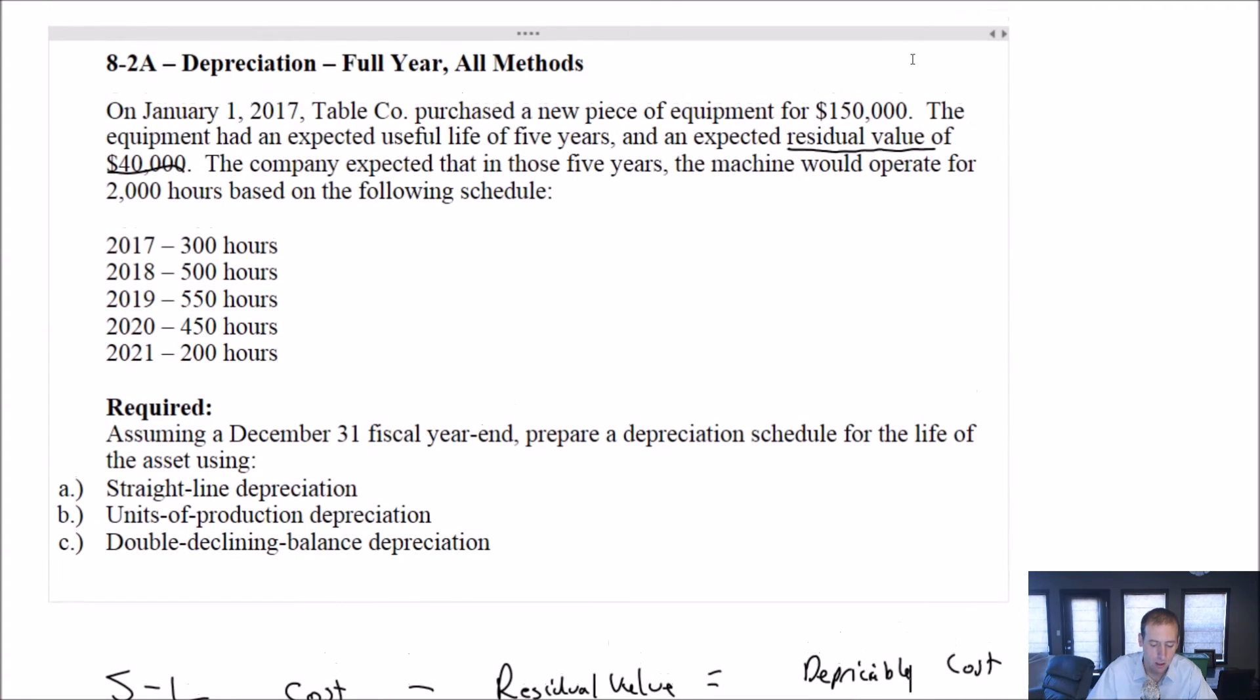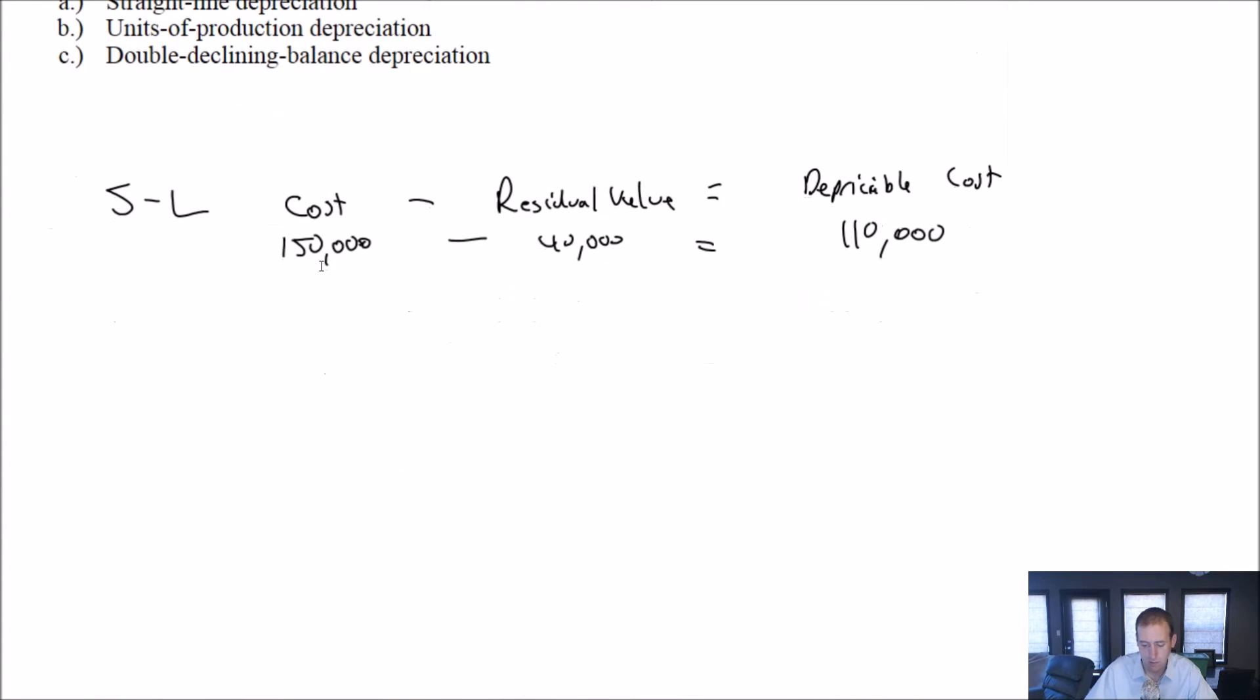So $110,000 of depreciation is expected. Let's read on. The company expected that in those five years, the machine would operate for this many hours. That's going to be all well and good, but we don't care about the hours for straight line. We just care about the number of years and the thing's going to be useful for five years. So we got this $110,000 asset we think will be useful for five years. $110,000 divided by five, $22,000 per year.